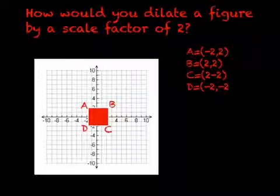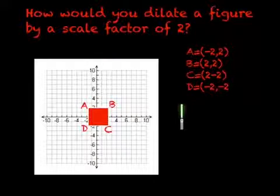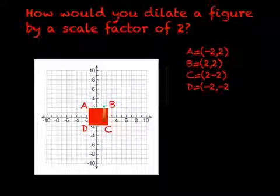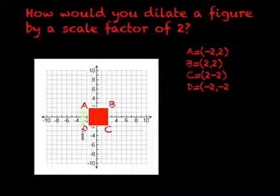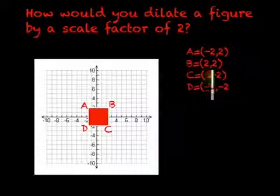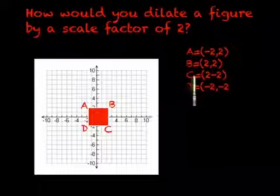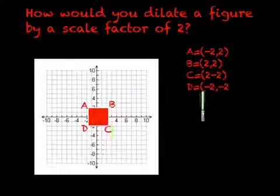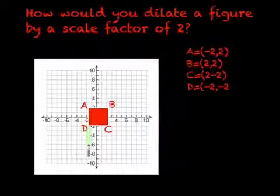The way you would dilate a figure so it could be larger is you want to get all the coordinates like this. So A would be negative 2, 2, which is right here. B is 2, 2, which is right there. C is 2, negative 2, which is right there, and D is negative 2, negative 2.